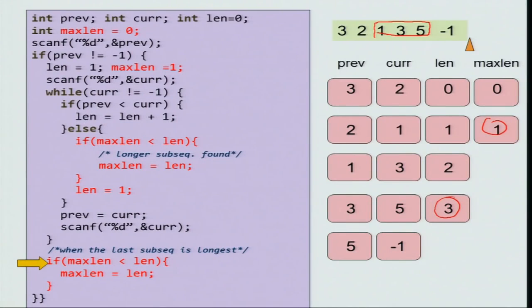So, we just check if max length is less than the length then you set max length to be the length. So, once you do that max length becomes 3. This is just to handle the case when the longest increasing subsequence is the last. Now, you can exit out of the if condition and then print that the maximum length that you have seen is 3.